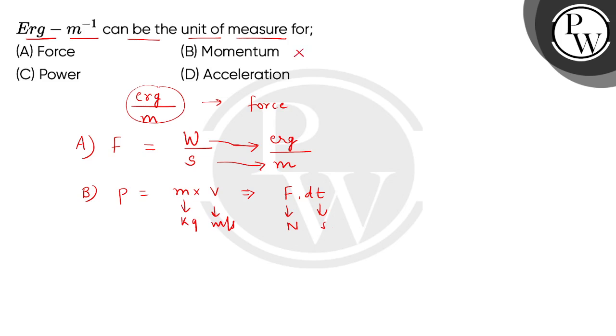So this is not the correct answer. Then the third quantity, we have power. We write power as work divided by time. So if we consider the CGS unit of work, which is given in question as Erg, time of SI and CGS unit will be second. So this is not the correct answer.